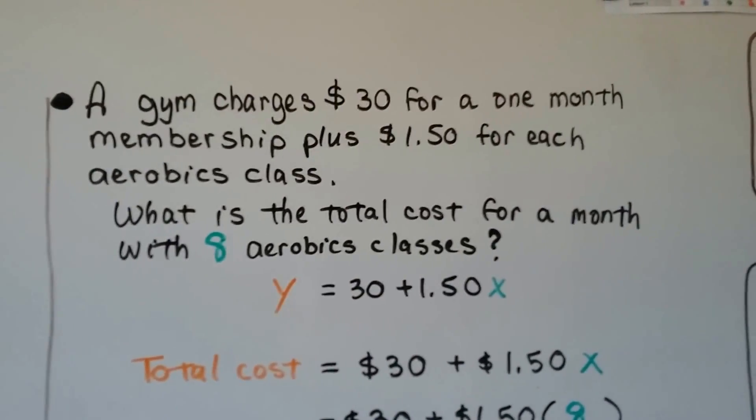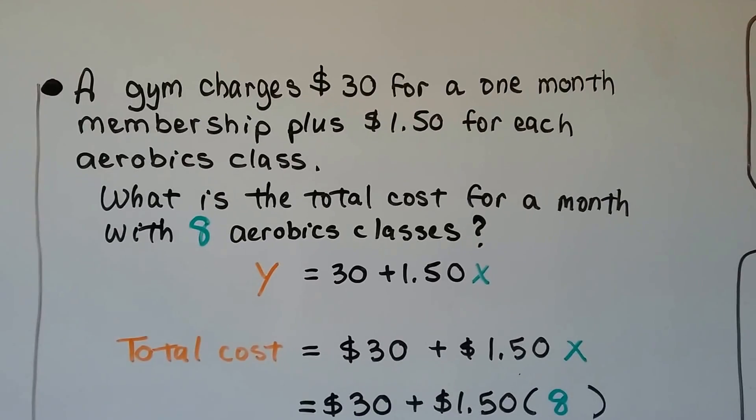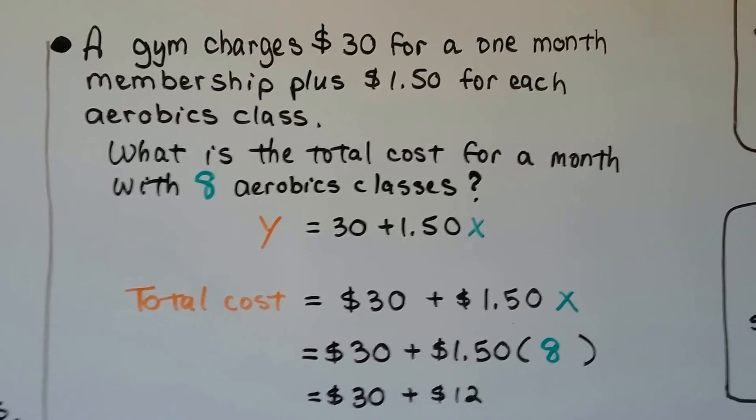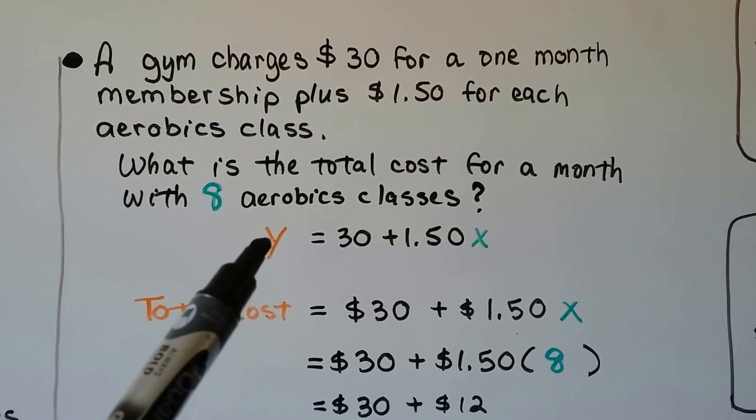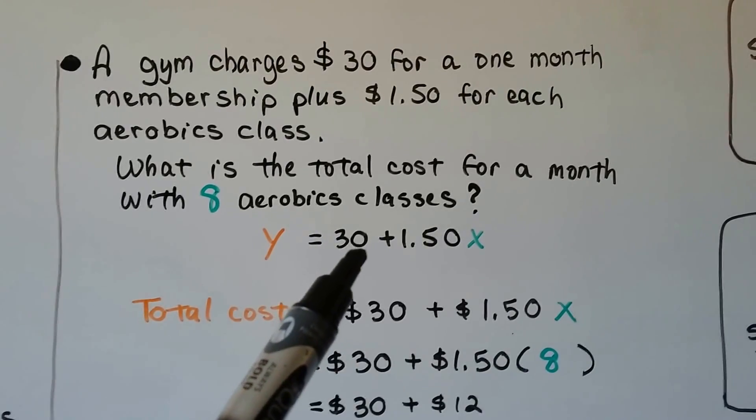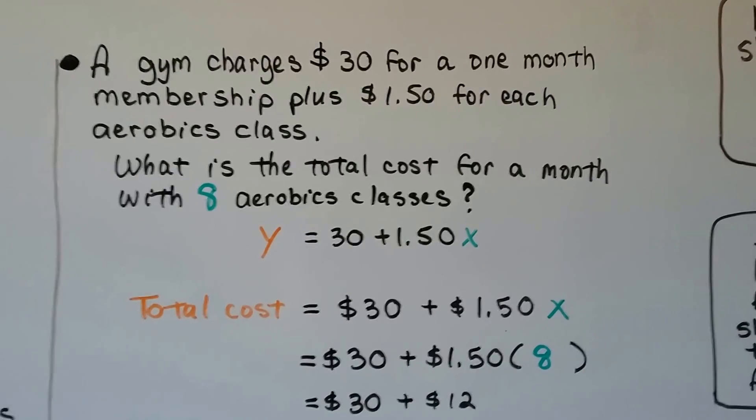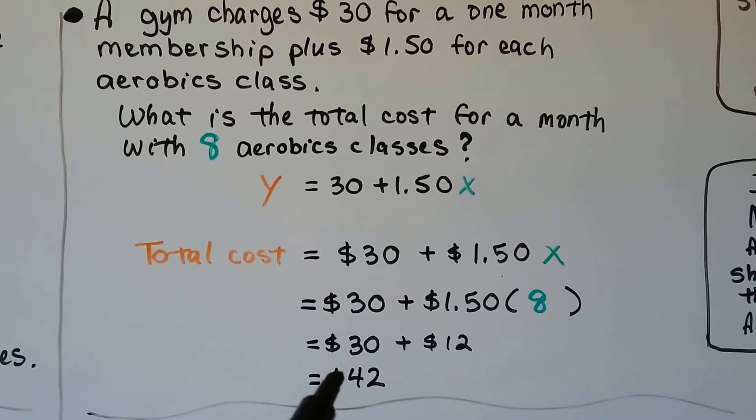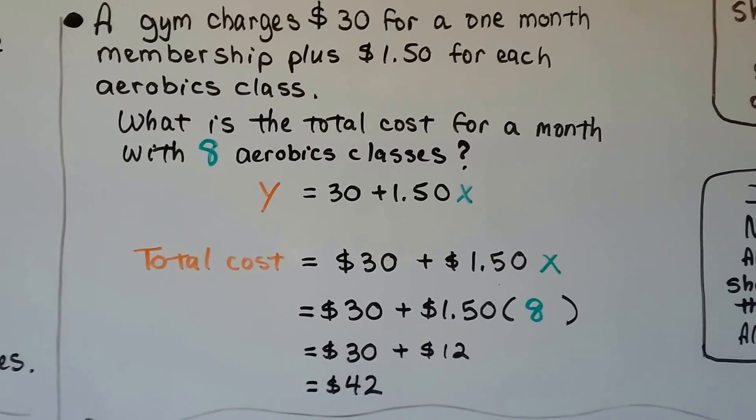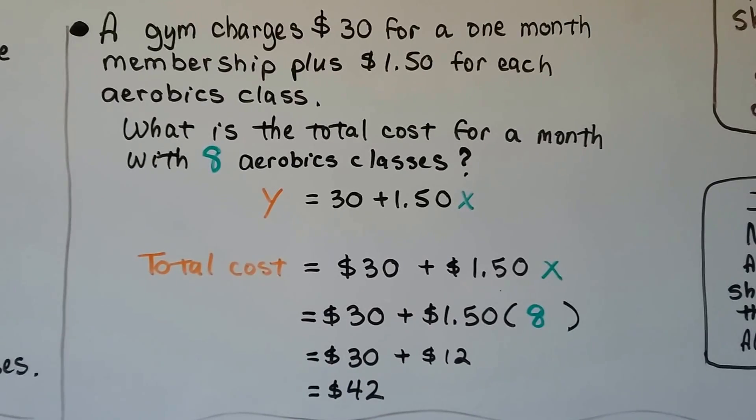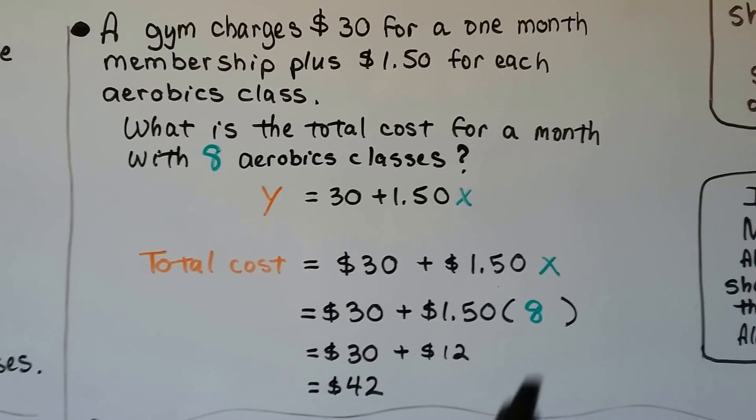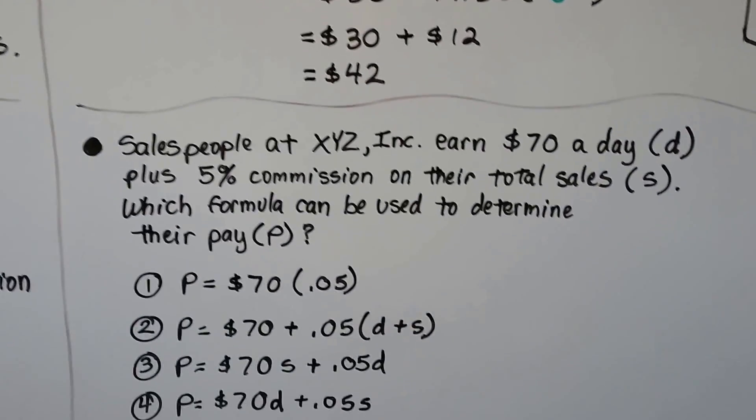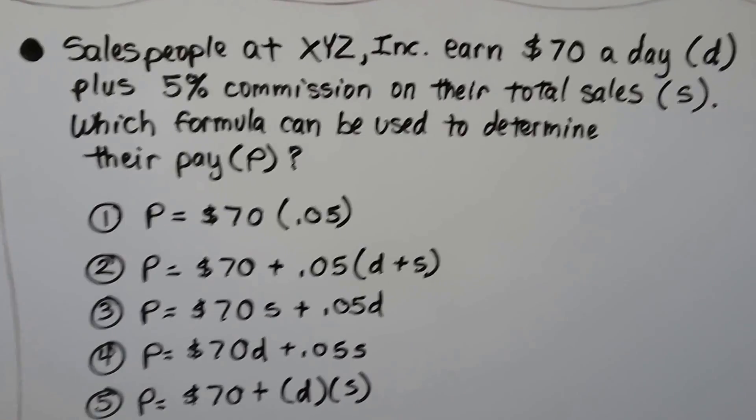A gym charges $30 for a one month membership plus $1.50 for each aerobics class. What is the total cost for a month with eight aerobic classes? So that means Y, the total cost, is going to equal that $30 a month plus $1.50 times however many aerobics classes we take. If we take eight classes, we do the $1.50 times 8 and that's $12. We add that to the $30 and we get $42. But what if the person didn't take any aerobics classes? Then that would be zero and it would just be $30. So depending on what this value is, it's going to affect that total value. It's a function.